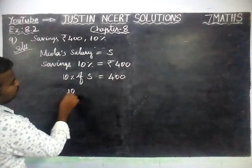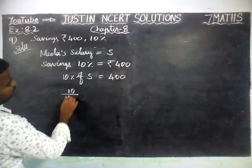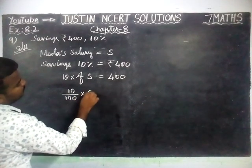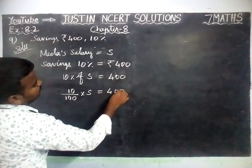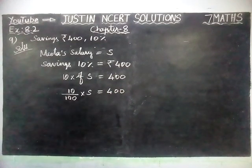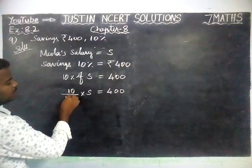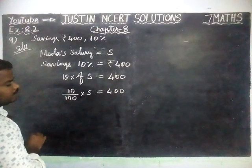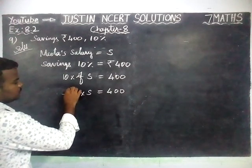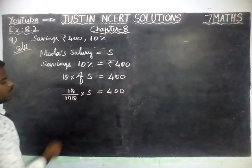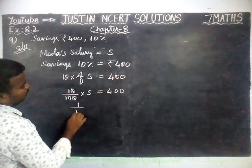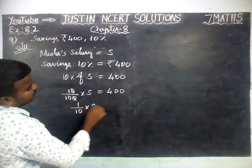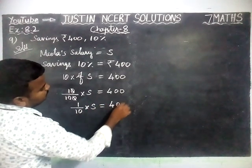Now, 10 divided by 100 into S is equal to Rs. 400. We can cancel here — the zeros get cancelled — and the remaining is 1 by 10 into S is equal to Rs. 400.